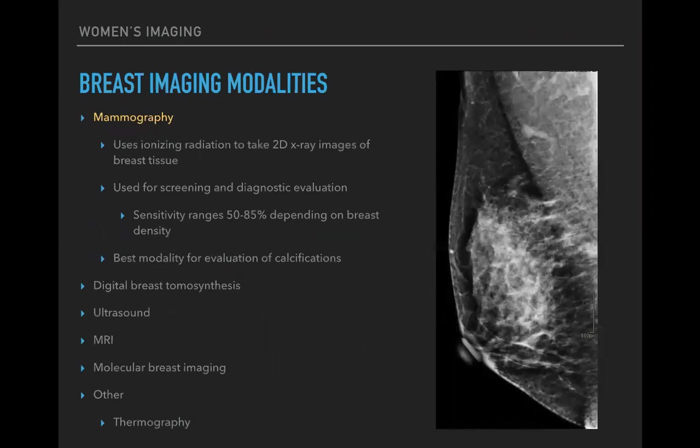There are many ways to image the breast. Mammography uses radiation — it's an X-ray to take a 2D image of the breast tissue — used for both screening and diagnostic evaluation. The sensitivity ranges from 50 to 85 percent depending on the density of the breast tissue. Mammography is the best modality for evaluation of calcifications, which can be either benign or associated with pathology, and 2D images are the best way to see those calcifications.